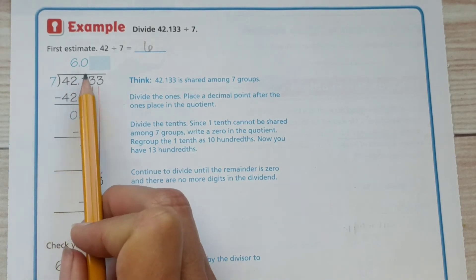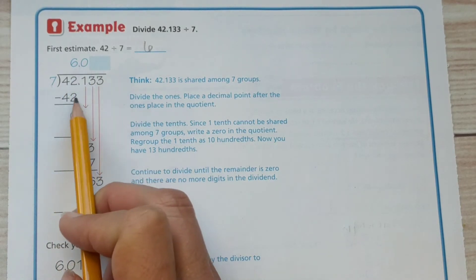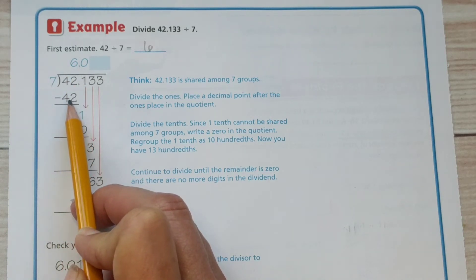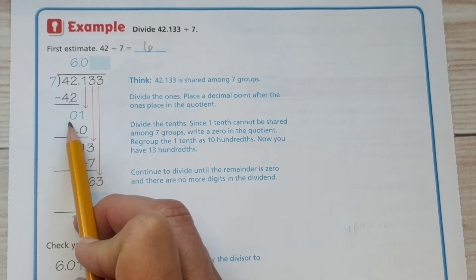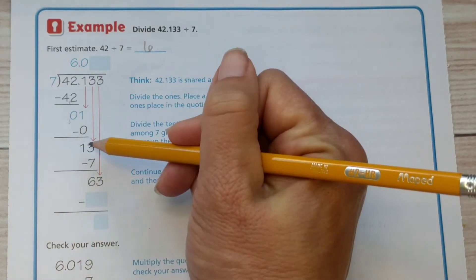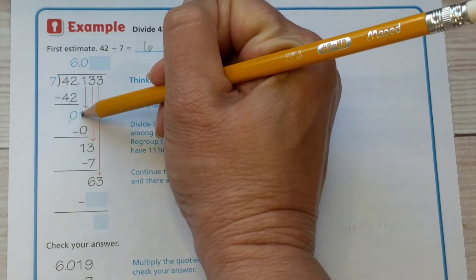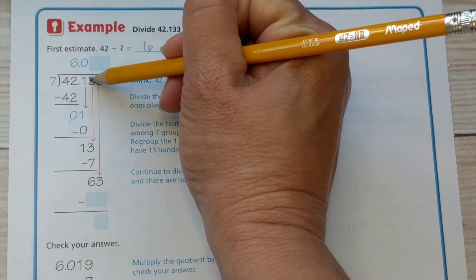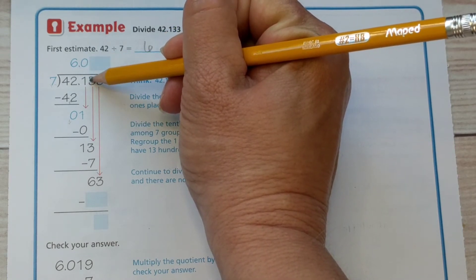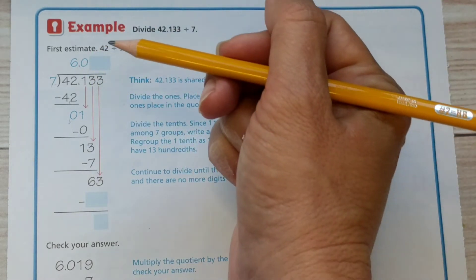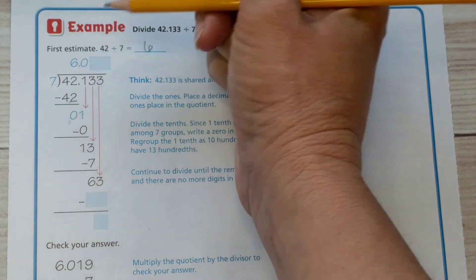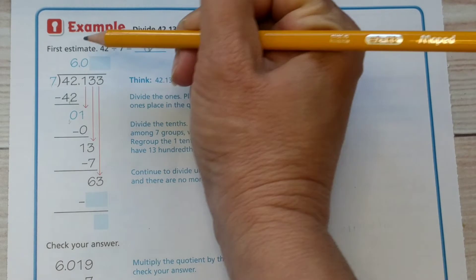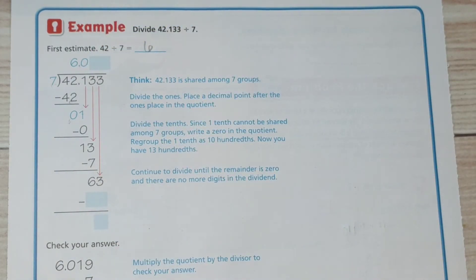Seven goes into forty two six times and then we multiply seven times six, put that product right there and subtract. We end up with forty two take that away at zero. Bring down the one. Seven does not go into one, but we still have to put a number above that one in the dividend and therefore we put a zero. Notice that they immediately brought up the decimal. You can do that with division, which is really great. Just immediately bring that decimal, put it right up into that quotient.